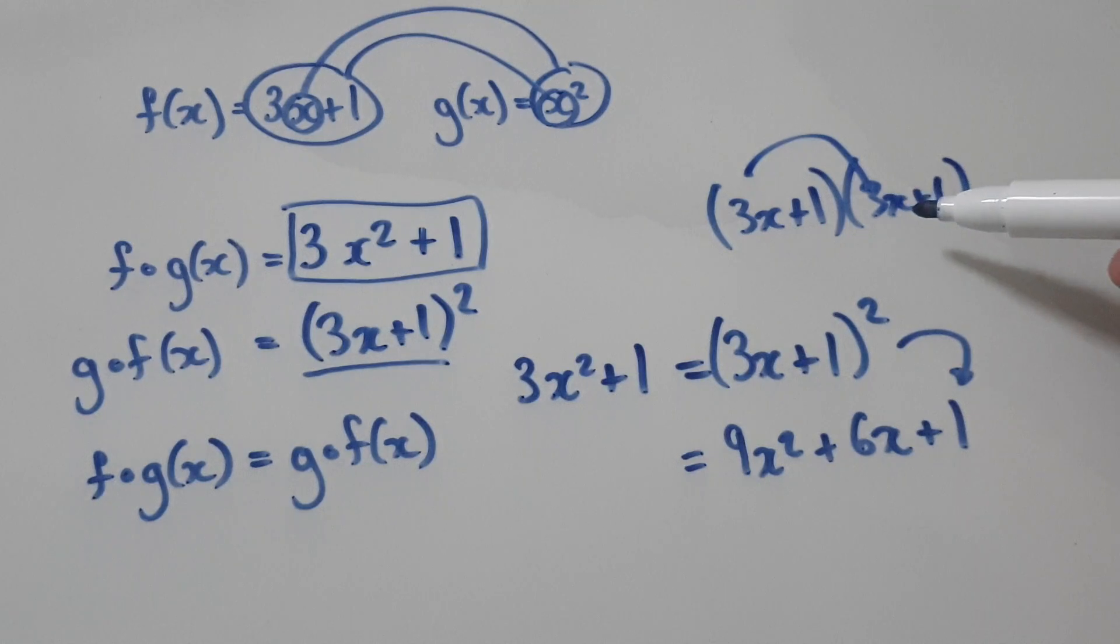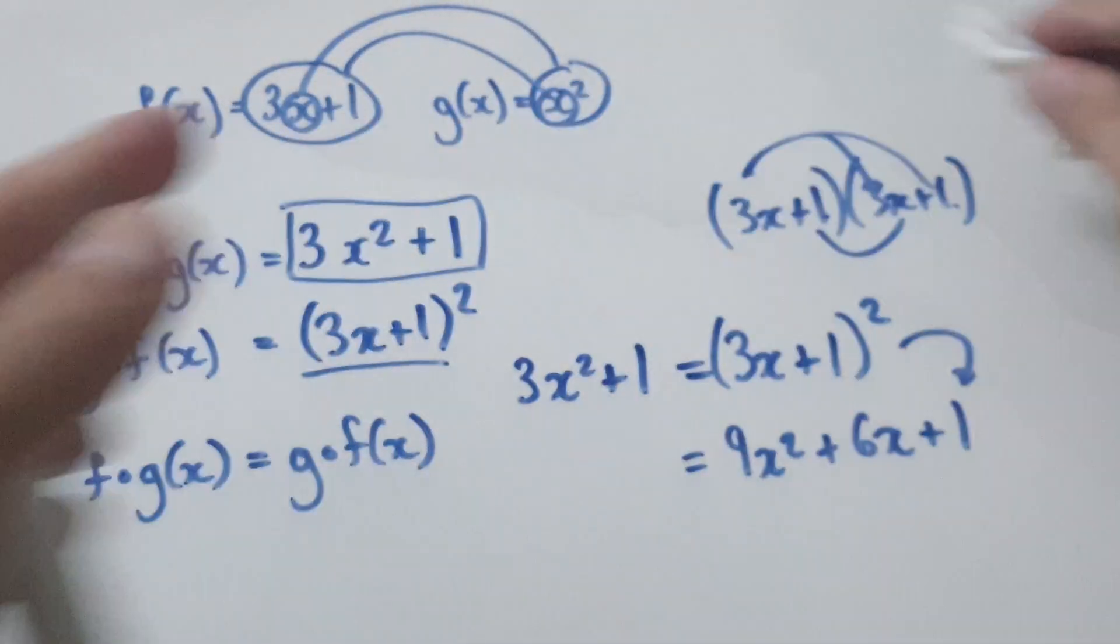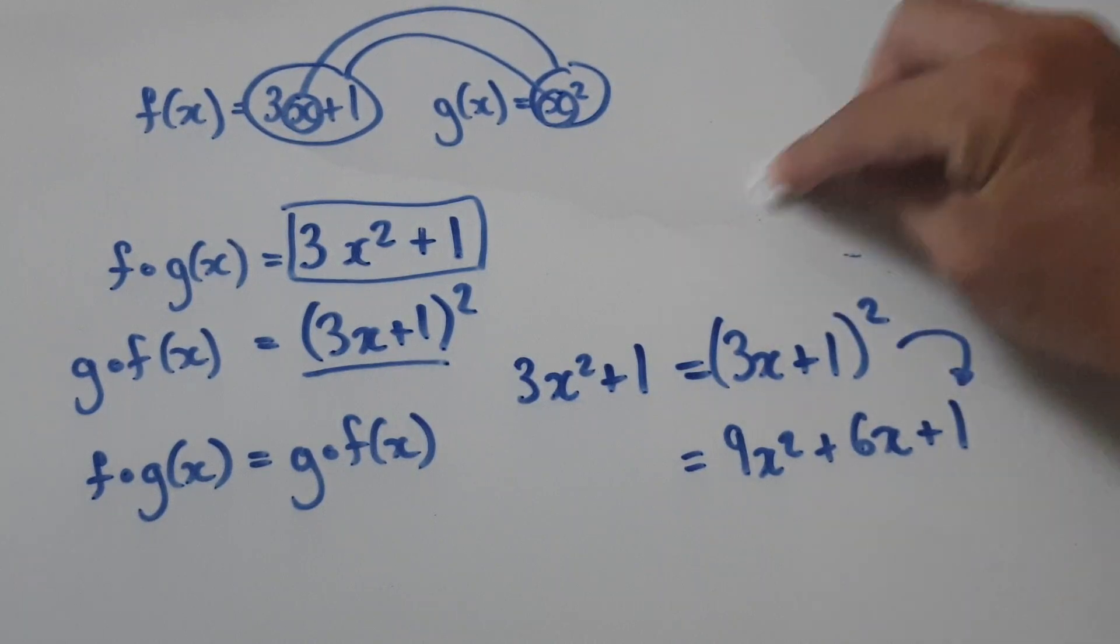You have to do this, 3x plus one, this times this will be 9x squared, and then this would be 3x, this will be another 3x, hence 6x, and then one times one is one.